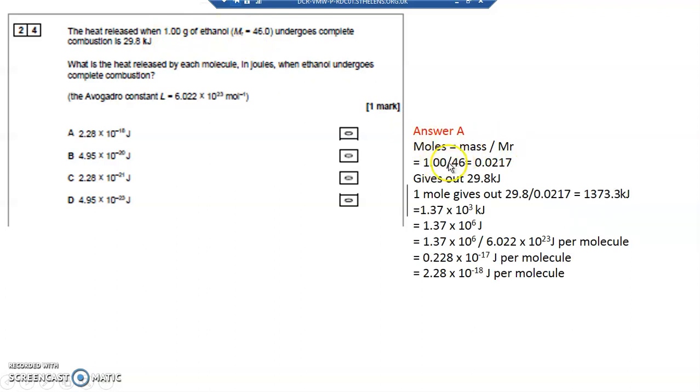Moles is mass divided by MR. Mass in grams, 1 divided by the MR of ethanol is 46. It's given you, so it's given you a clue, is 0.0217 moles. Now, 0.0217 moles gives out 29.8 kilojoules.